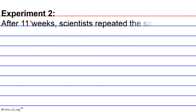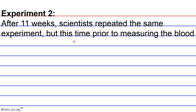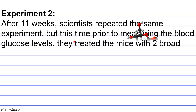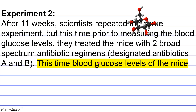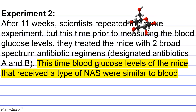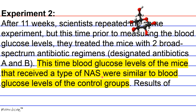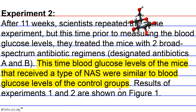Experiment 2. After 11 weeks, scientists repeated the same experiment, but this time prior to measuring blood glucose levels, they treated the mice with two broad-spectrum antibiotic regimens designated Antibiotics A and B. This time, blood glucose levels of the mice that received a type of NAS were similar to blood glucose levels of the control groups. Results are shown in Figure 1.